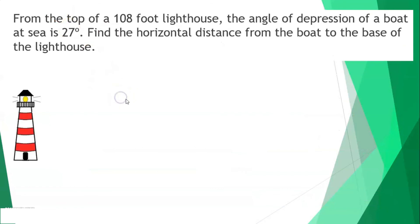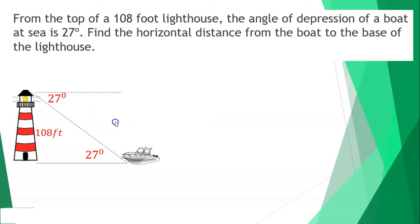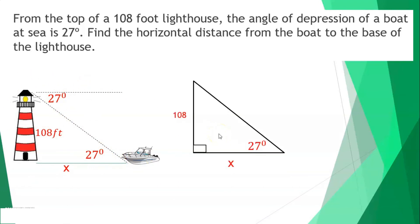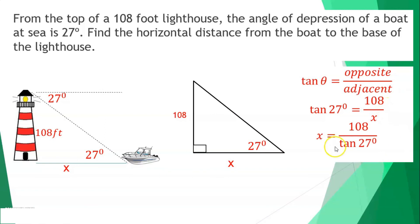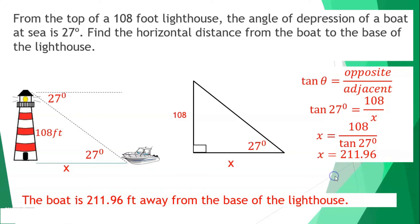From the top of a 108-foot lighthouse, the angle of depression of a boat at sea is 27 degrees. Find the horizontal distance from the boat to the base. Using alternate interior angles and tangent: tan(27°) = 108/x. Cross-multiplying gives x ≈ 211.96. The boat is 211.96 feet from the base of the lighthouse.